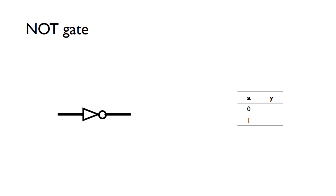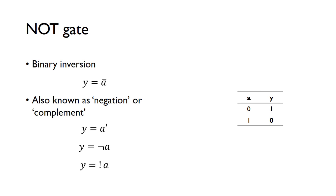The NOT gate is a bit different in that it only has one input — input A and output Y. A NOT gate is also known as an inverter. It's very straightforward: a zero on the input gets inverted to a one on the output, and a one on the input gives us a zero. When a variable has a bar over the top, that indicates it is inverted. It's also known as negation or complement.